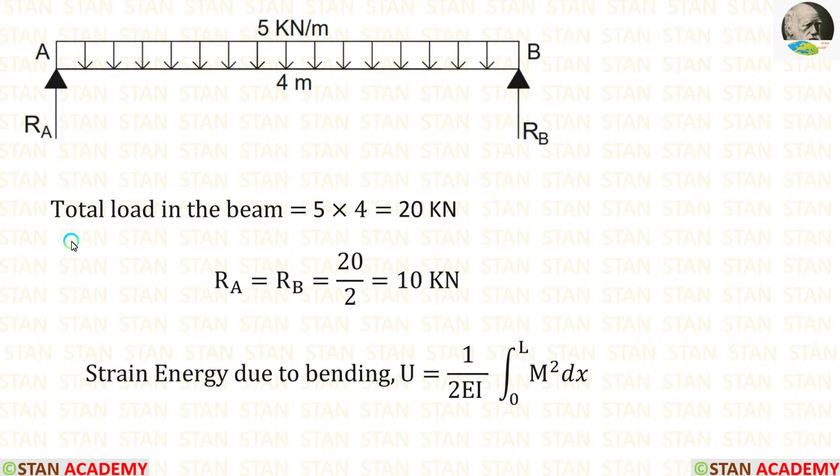Now, let us calculate the reactions. In this beam, we are having symmetrical loading conditions. The UDL 5 kilo Newton per meter is acting for the full span. So it is very easy to calculate the reactions. The reactions Ra and Rb will be equal to the total load divided by 2. The total load in the beam is 5 into 4, because when the UDL comes, we have to multiply the load into distance to get the total load. So the total load by 2, we will get Ra and Rb, which are equal to 10 kilo Newton.